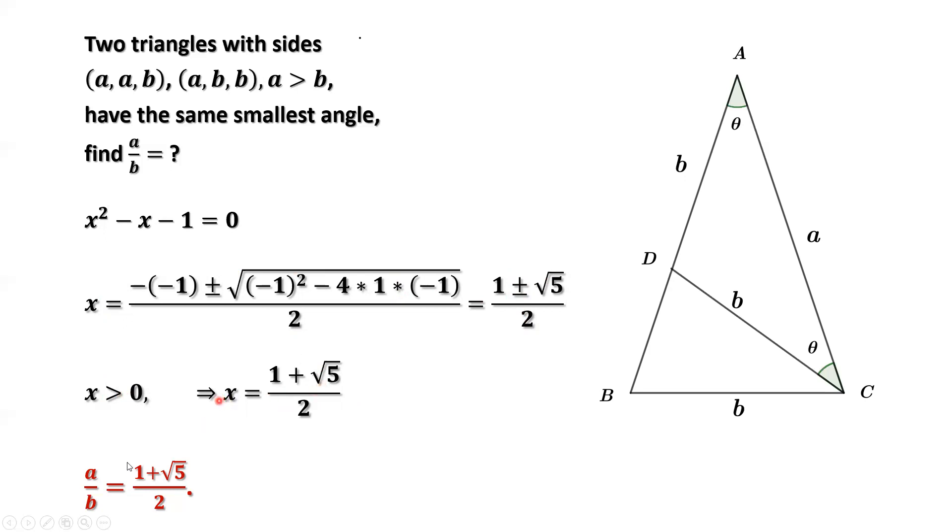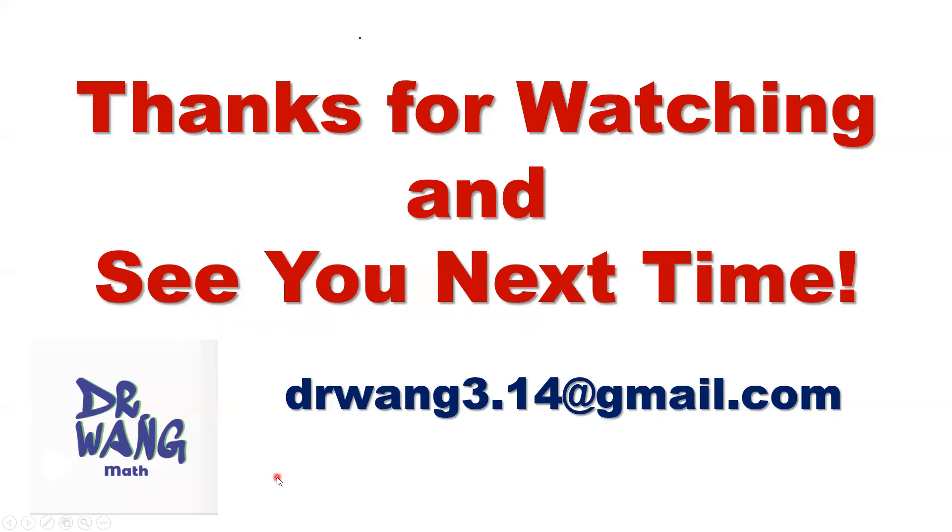What is x? By definition, that's the ratio a over b, that's the one we want to find. So the ratio of a over b equals 1 plus square root of 5 over 2. That's all. Thanks for watching and see you next time.